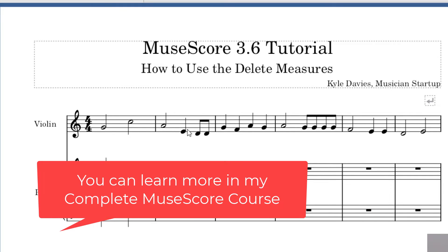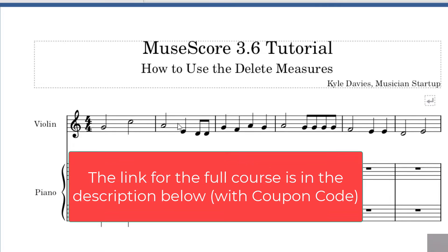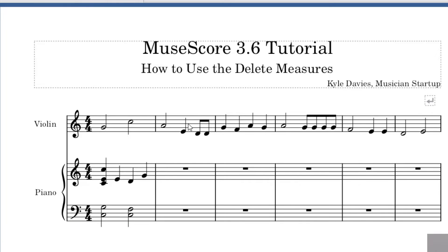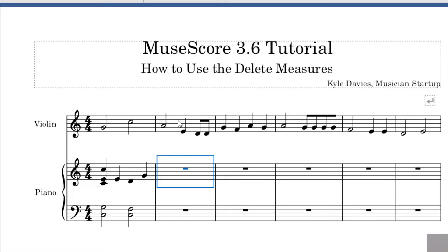Let's say I want to delete measure number two. This is going to delete everything in this measure, including the violin one part and the piano part. To select the measure, you want to click somewhere in the middle — it can be kind of tricky to find, but usually if you click somewhere in the middle, you can select it. Once you've selected the measure, there will be a blue box that appears around the measure like you see here.